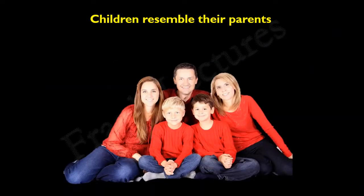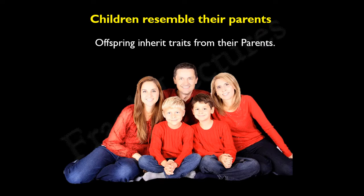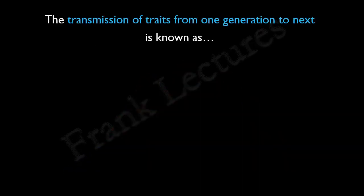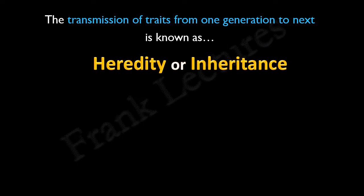We all know that children resemble their parents. Traits such as the color of eyes, hair color, the height and weight of children resemble their parents. This means offspring inherit traits from their parents. This is true for humans as well as for plants and animals. The transmission of traits from one generation to the next is known as heredity or inheritance.